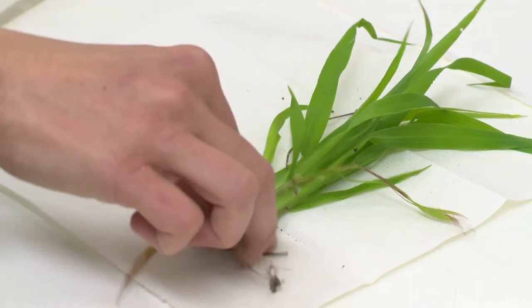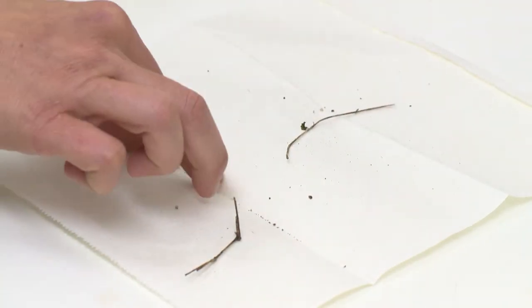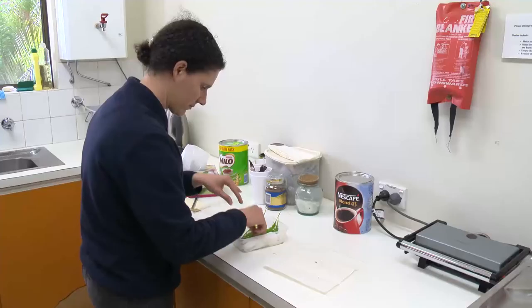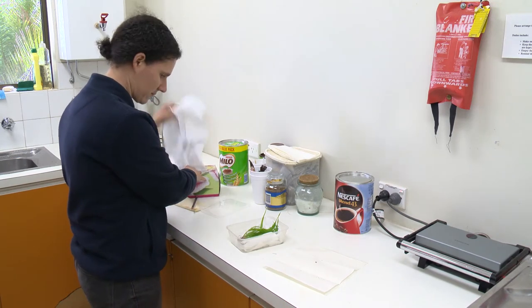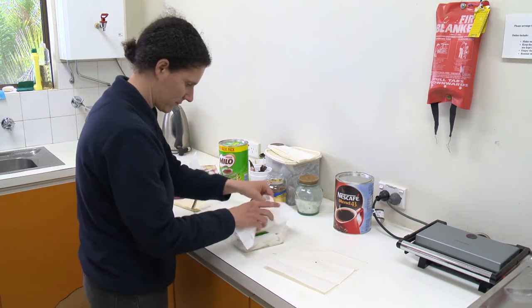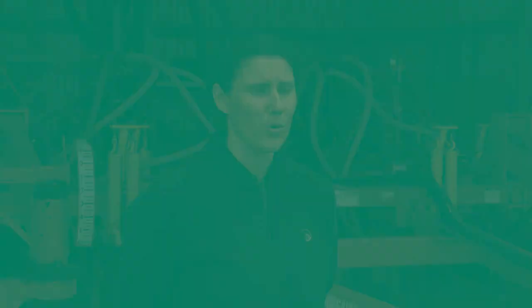Farmers can also send in specimens for identification, but as Svetlana Micic explains, it's important to keep some guidelines in mind. There are different rules for different pests depending on what they are. If you have a soft-bodied insect like a caterpillar or a larval stage of a beetle, collect it with what it's found on.